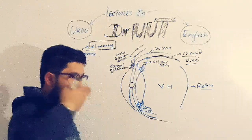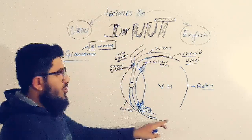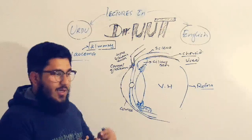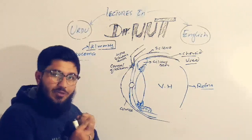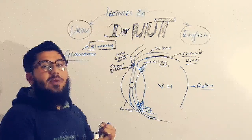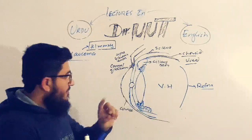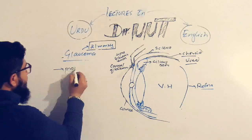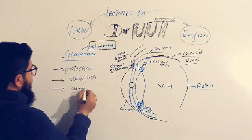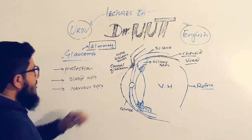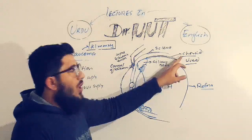When the sclerotic layer comes and bulges outside at the front, that portion is called the cornea, which gives shape and protection to the eye. Every part of the body needs three things: protection, blood supply, and nervous supply. The sclerotic layer handles protection, the second layer provides blood supply and is known as the choroid.